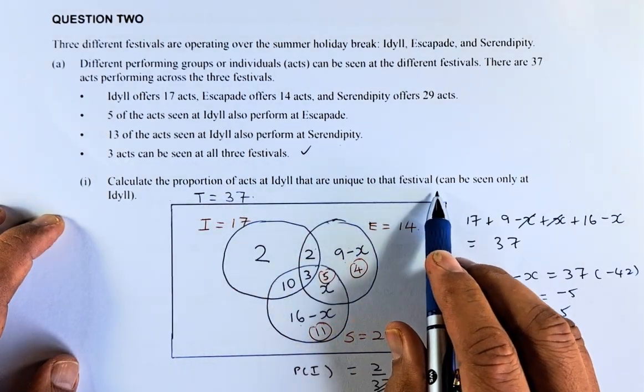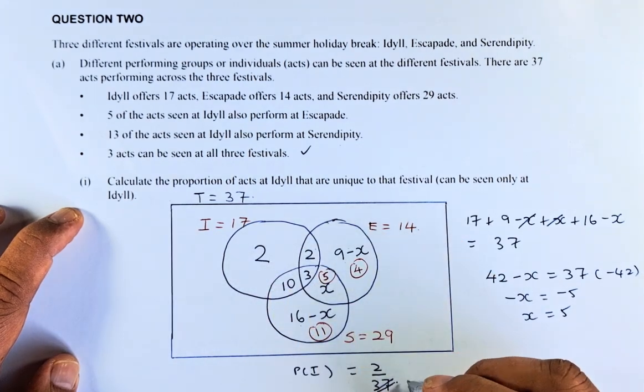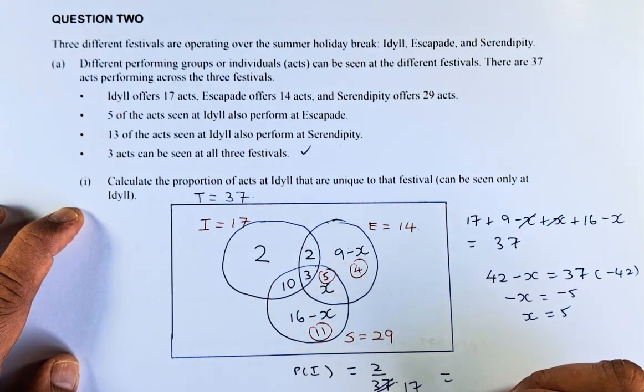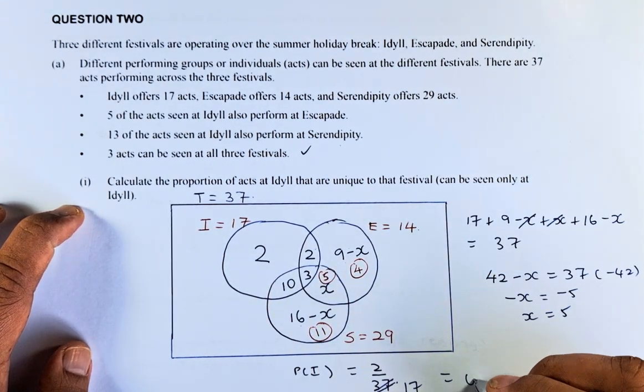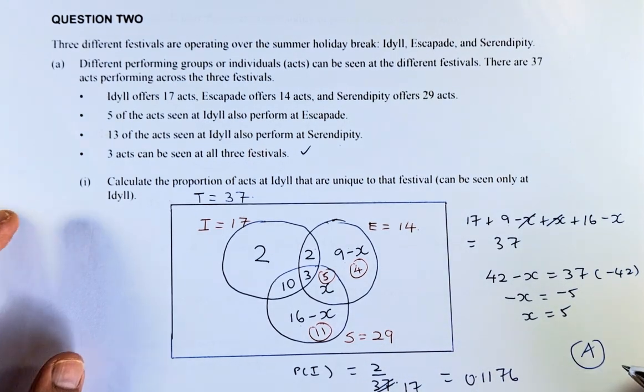What portion are unique that can be only seen at Idyll? So it is going to be 2, only seen at Idyll. So 2 out of 17 or simplify is 0.1176. And that will give you an achieve.